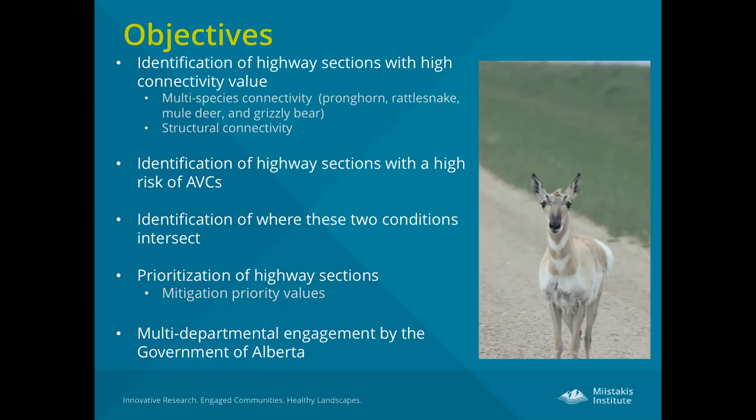This project was really interested in looking at where these two conditions intersect: where we have high connectivity value and where we have high risk of animal-vehicle collisions, and prioritizing those sections of highway. The prioritization of those highway sections was done through the development of different scenarios, allowing transportation agencies to use this tool from a planning perspective — where you can look at different scenarios in which you may favor wildlife connectivity, generate weights for each index based on how you prioritize them, and see how that changes your prioritization and how you can integrate that into planning.